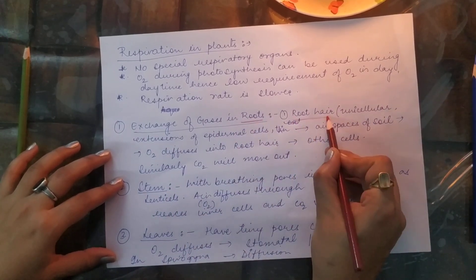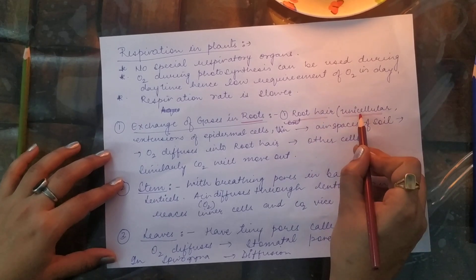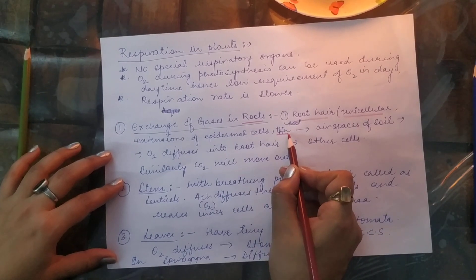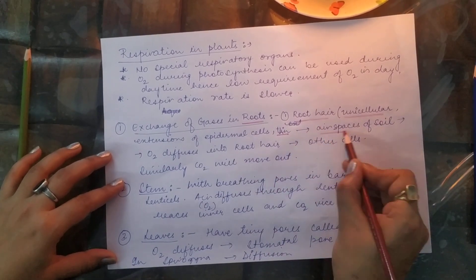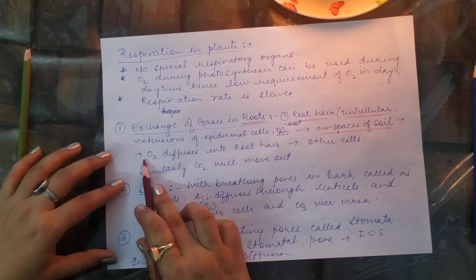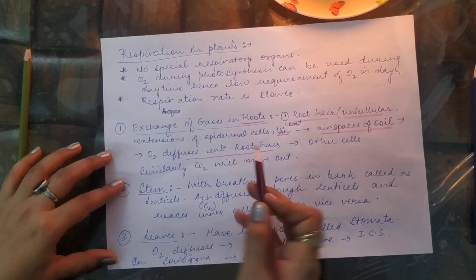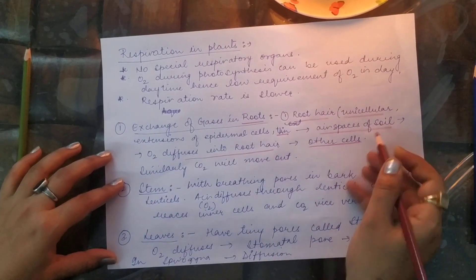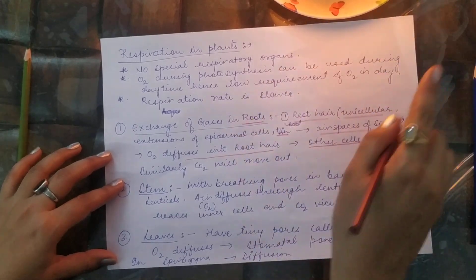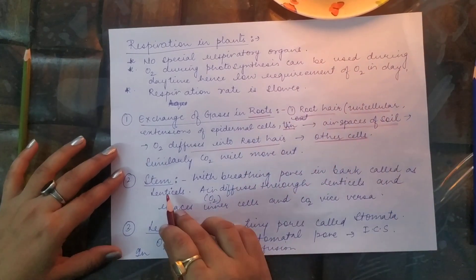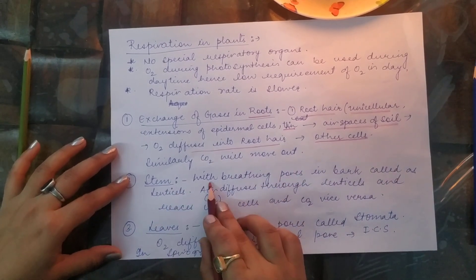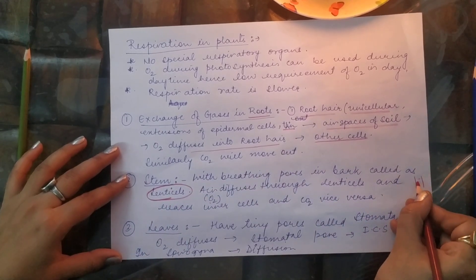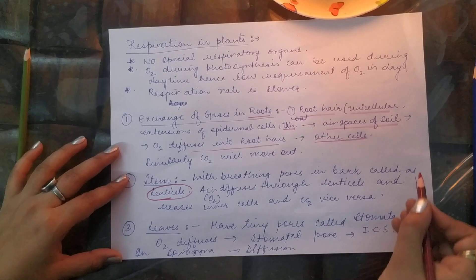There are three different kinds of gas exchange in roots, stems, and leaves. Roots have root hairs — unicellular extensions of epidermal cells — which are very thin to allow easy diffusion. Air from the soil spaces diffuses into the root hairs, moving from higher concentration to lower, and then circulates to neighboring cells of the root.